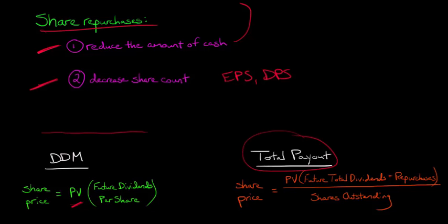The total payout model, we're going to be taking the present value of the future total dividends and share repurchases and then dividing that by the amount of shares outstanding to come up with a share price. And I know that's a little abstract, so let's get into the specifics.